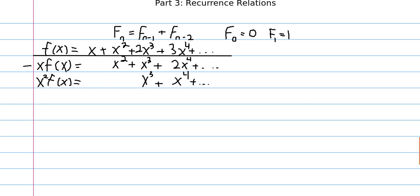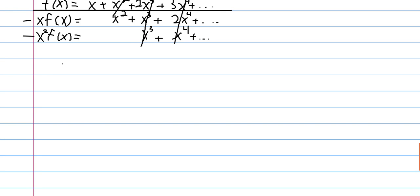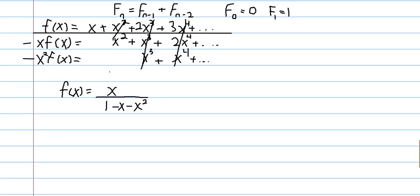So if I subtract x times F of x and I subtract x squared times F of x, then everything will cancel except for this x. So we have something that's in terms of F of x, and we just have something that's not in terms of F of x. And easy enough, we can just factor out an F of x and simplify. And what we get is that F of x, the generating function for the Fibonacci numbers, is equal to x divided by 1 minus x minus x squared.